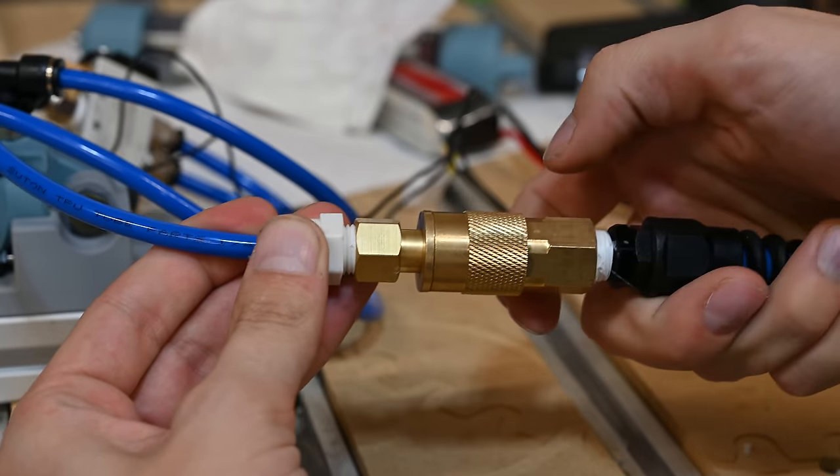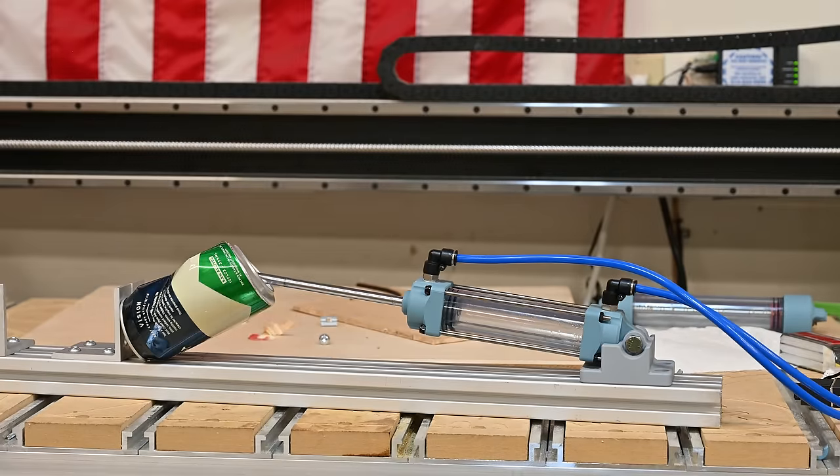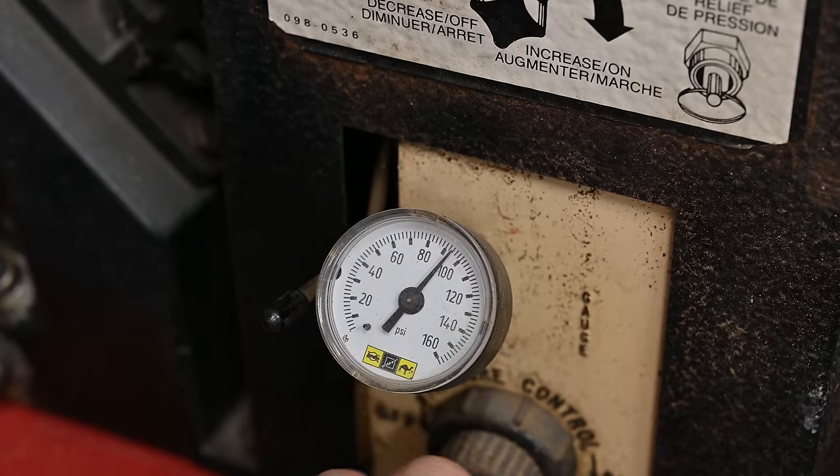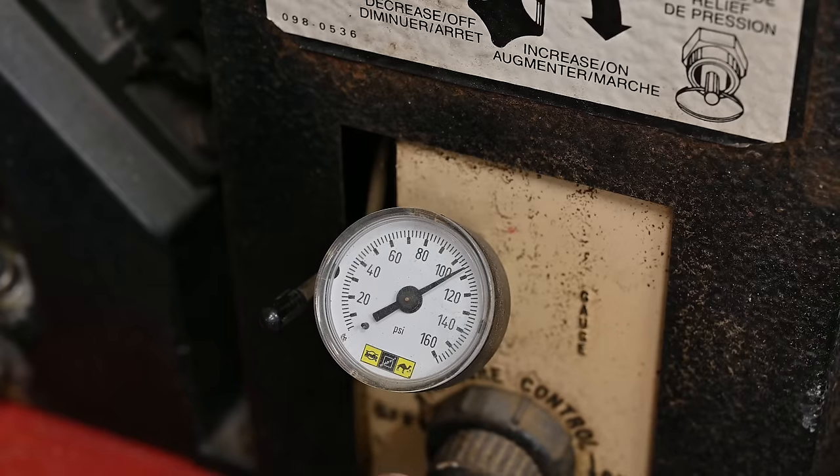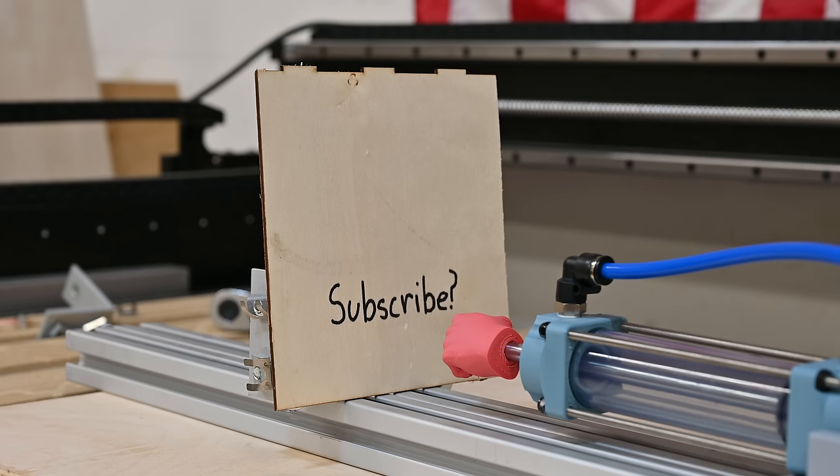Testing version 2 showed that it works just as well as version 1, and that it has even less leaking. I was able to crank the pressure all the way up to 110 psi without any problems. Doing some quick math, at this pressure it's putting out about 75 pounds of force. It can even break through some thin plywood.